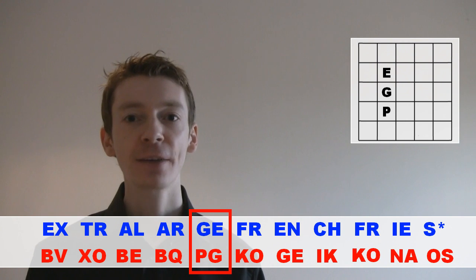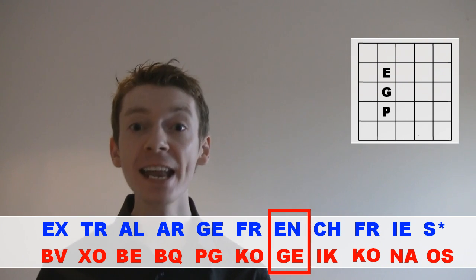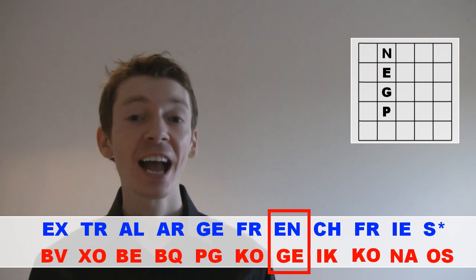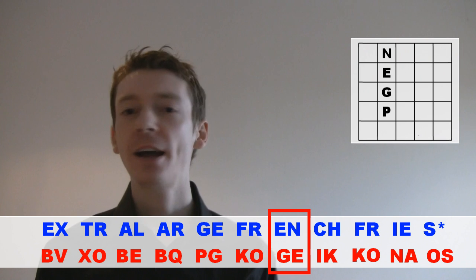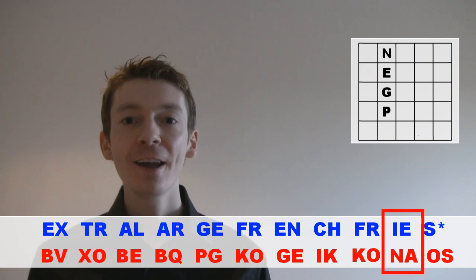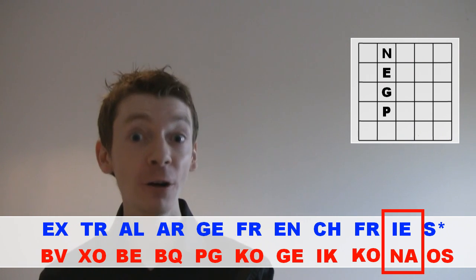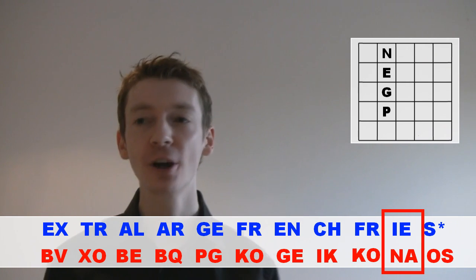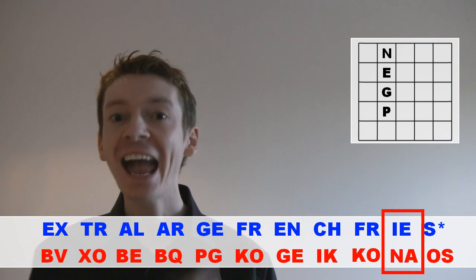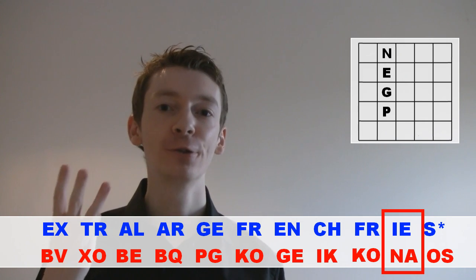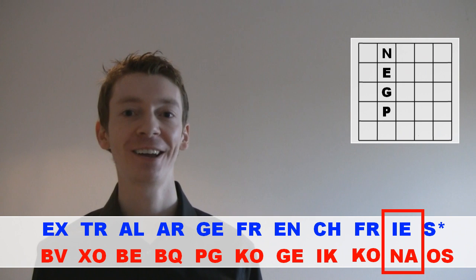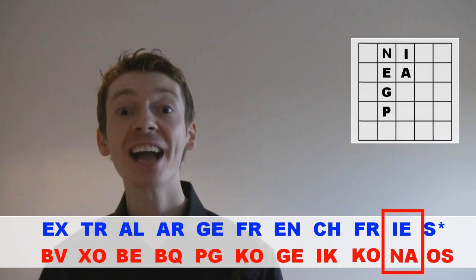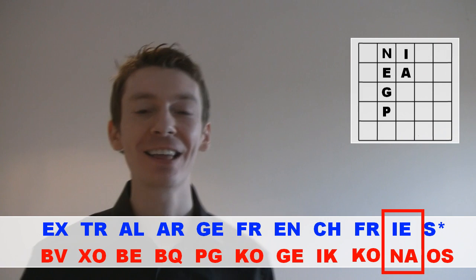Now let's try another pair — EN. EN becomes GE in the code. For the same reason, you can now say that N is in the same column as E and G. Let's take a third pair: IE. IE becomes NA in the code. Now we know those letters can't all be in the same column — they wouldn't fit. And they can't be in the same row because E and N are in different rows. So it must be the third rule — they must be diagonal, opposite each other. You keep going like this, making these deductions, and you can completely reverse engineer the secret square that made the code.